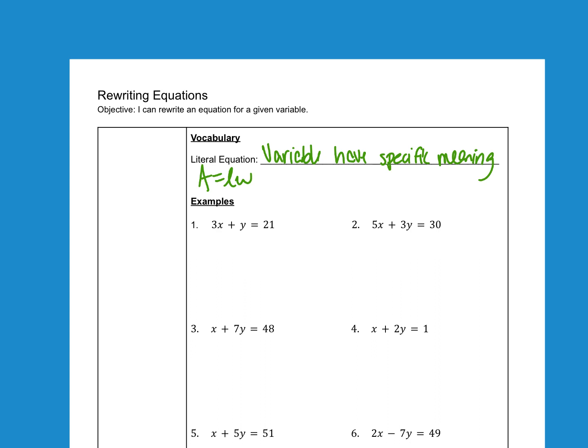We're going to start with some equations in two variables with X and Y because this is what we're going to need to be able to do to graph these. When we graph, we want equations in slope intercept form. Slope intercept form is Y equals MX plus B. So if we can rewrite our equation in this form, then we could take the next step and graph it.